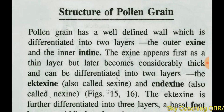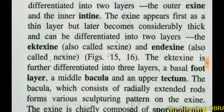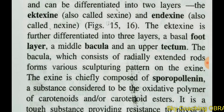The exine is further differentiated into three layers: the basal foot layer, the middle bacula, and the upper tectum. The foot layer is at the base, the middle bacula runs through the center, and the tectum layer at the top consists of radially extended rod-form structures of various sculpturing patterns of the exine.